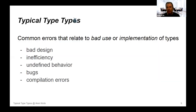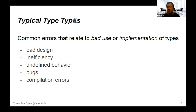Typical type typos: I'm going to speak about common errors that relate to bad use or implementation of types. This relates either to bad design, inefficiency, undefined behavior, pure bugs, or compilation errors. Being a teacher, I do see quite a lot of bugs. The bugs that I see in the code of juniors and students — they bring the same bugs to the industry later on. Bugs do tend to hide themselves.